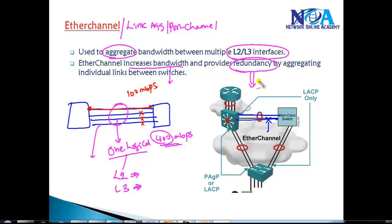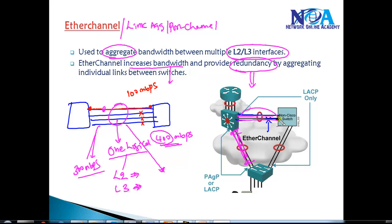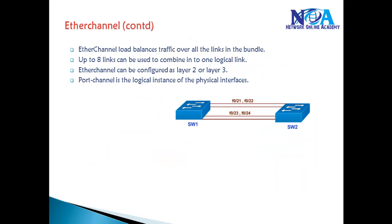EtherChannel provides redundancy — if any one link fails, traffic is still forwarded out of the remaining three links, so 300 Mbps of traffic will still be forwarded. EtherChannel allows configuration between the same platforms, like Cisco-to-Cisco, and it can also be implemented between Cisco and non-Cisco switches. EtherChannel will load balance the traffic over all links in the bundle.